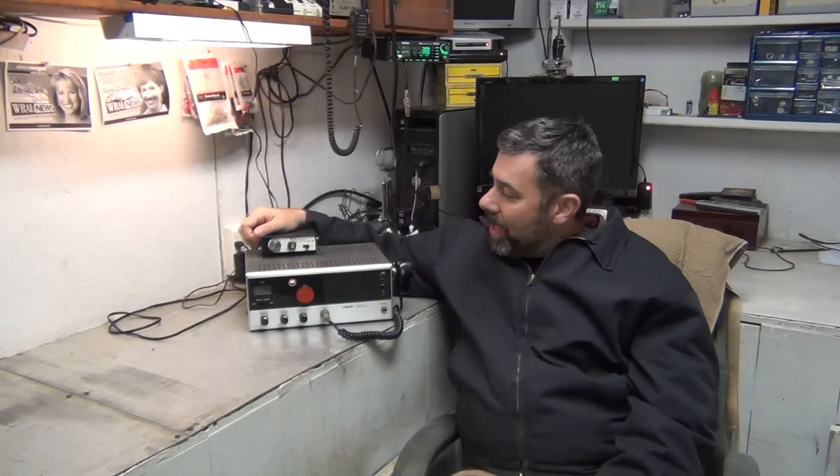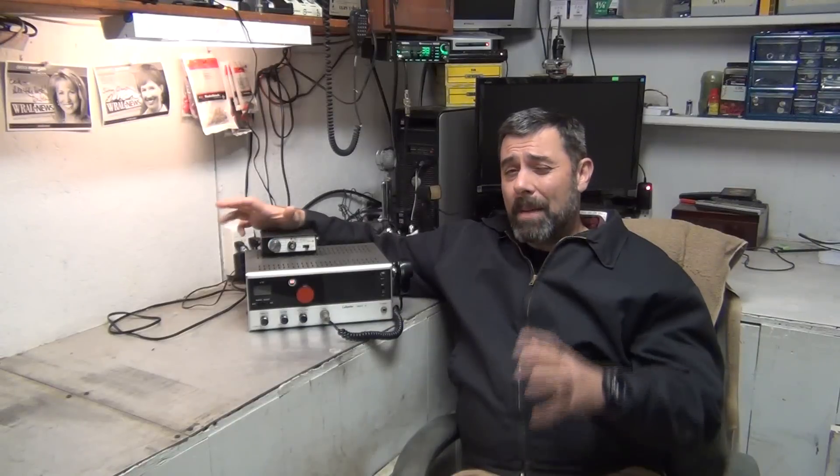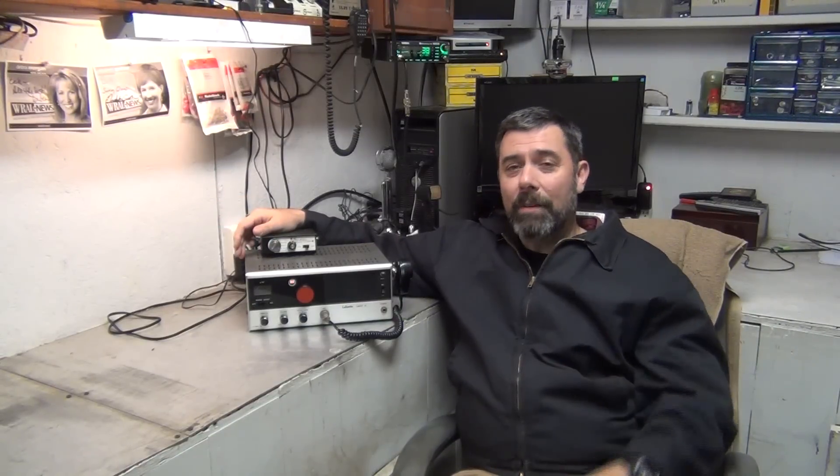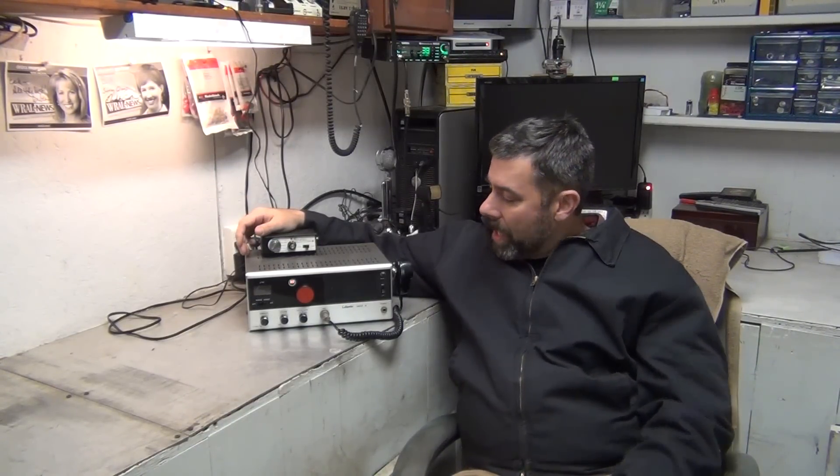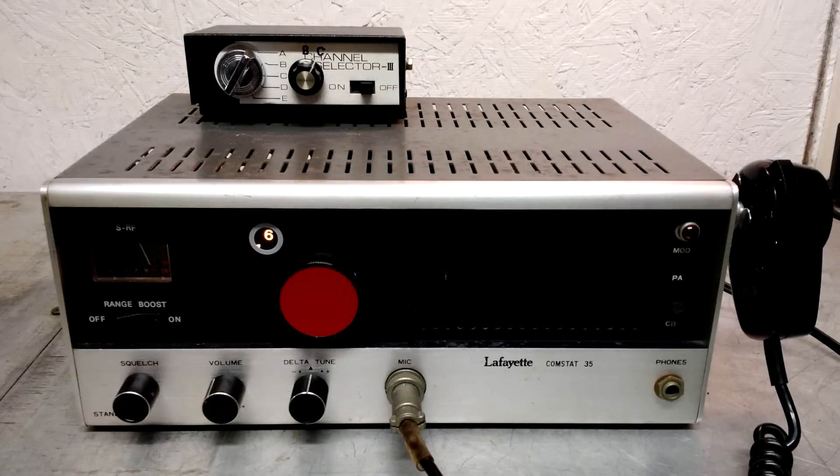But I wanted to play with this radio. I have been working on the radios that I picked up as part of that base station collection. I've already shown you two of those, the Cobra and the Royce. Well, now it's time to look at this Lafayette ComSat 35. This one's old. This one is very old.